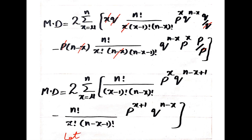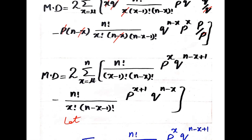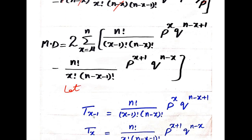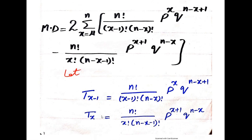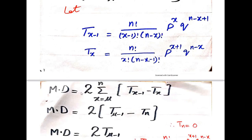Let t(x-1) = n!/((x-1)! · (n-x)!) · p^x · q^(n-x+1), and t(x) = n!/(x! · (n-x-1)!) · p^(x+1) · q^(n-x). So mean deviation equals 2 times the sum from x=μ to n of [t(x-1) − t(x)].